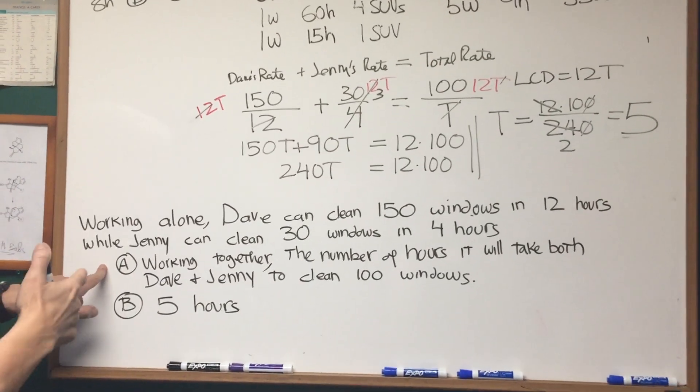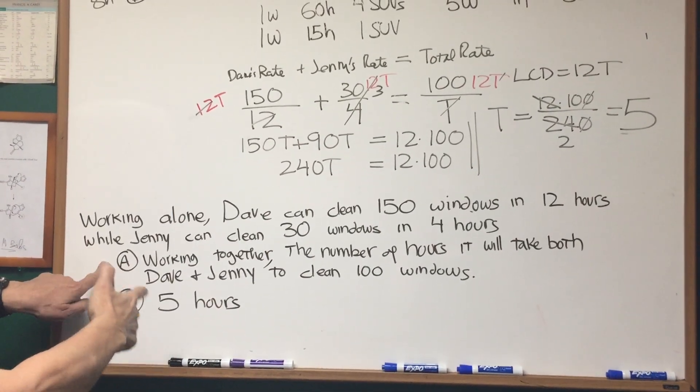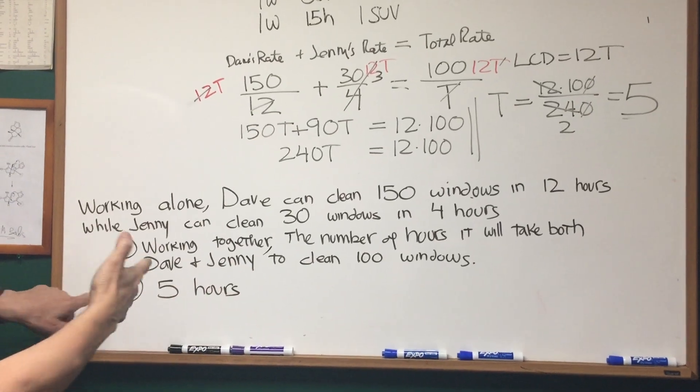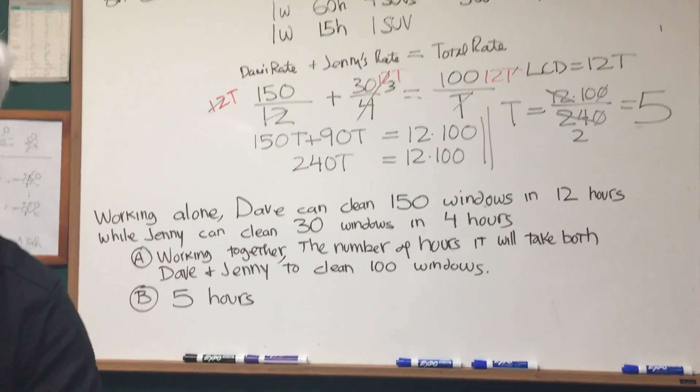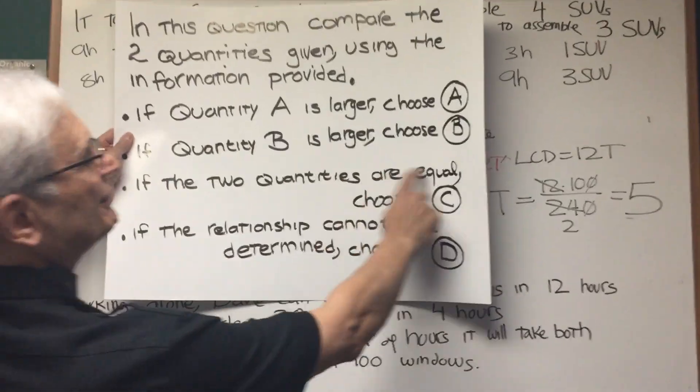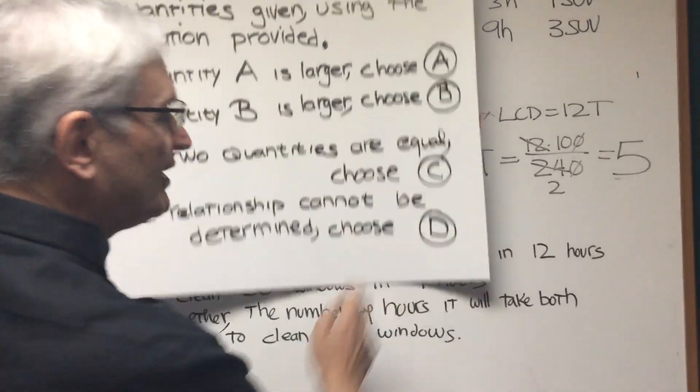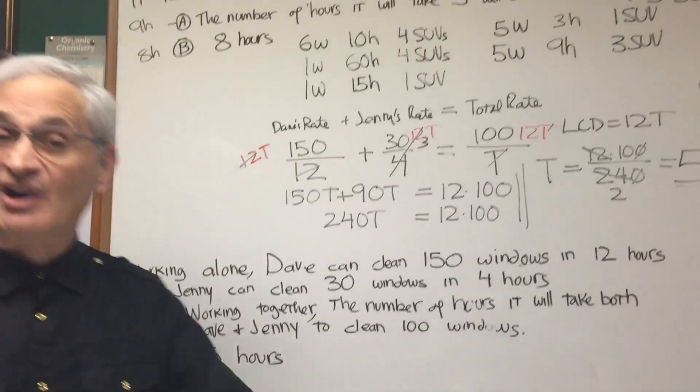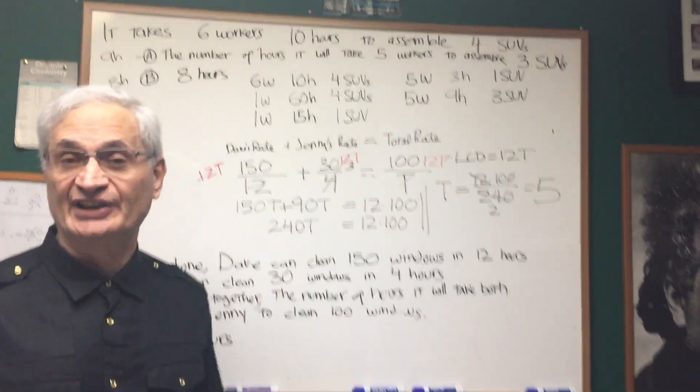Okay, we look at choice, statement A is equal to 5 hours. Statement B is equal to 5 hours. If we look at the original statement of the problem, if the two quantities are equal, choose C. So in this case, the two quantities are equal, and we choose C. And there we are.